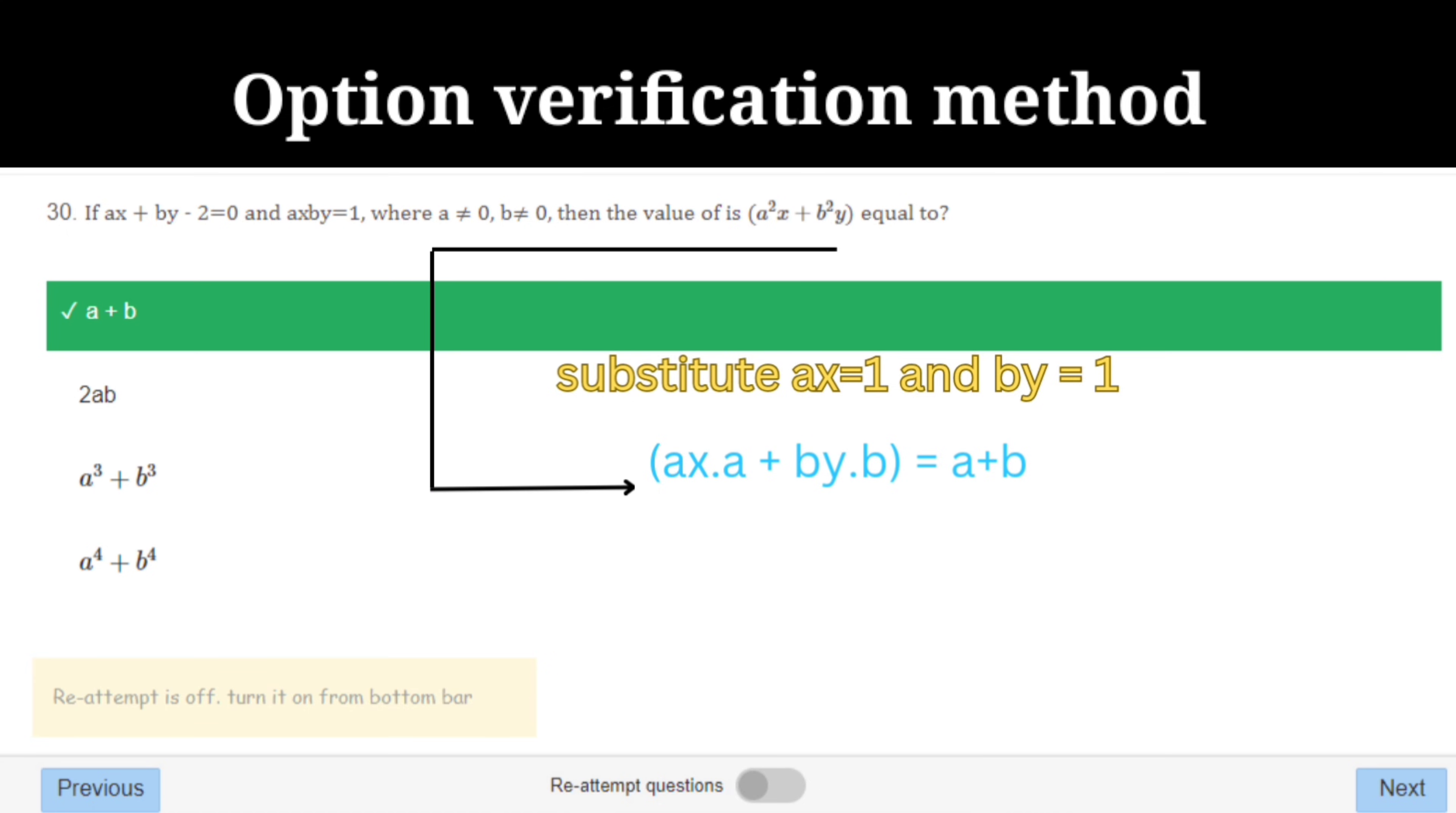Here, if you take ax equal to one and by equal to one: one plus one is two, minus two equal to zero. And one into one equal to one, which means it satisfies both conditions. So you can just substitute ax equal to one and by equal to one in the final equation, that is a square x plus b square y. You will get the answer as a plus b.